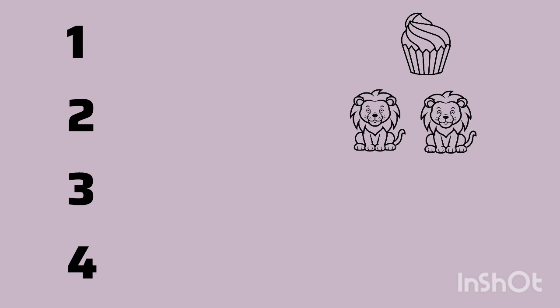Some numbers are given: 1, 2, 3, 4. You have to see the number and count the object with me. 1 number, 1 cake. 2 number, 1, 2, 2 lions.